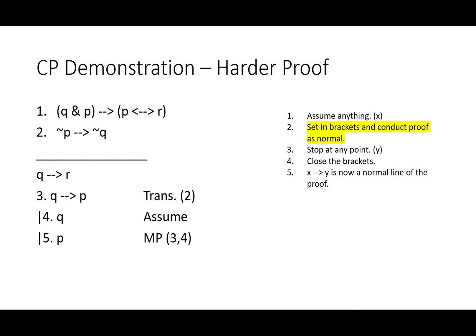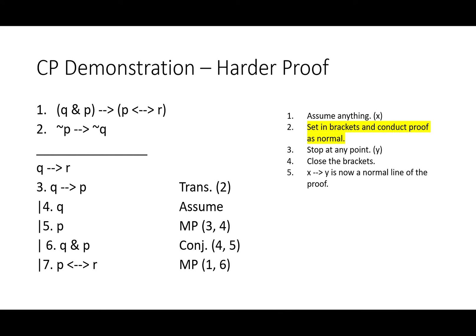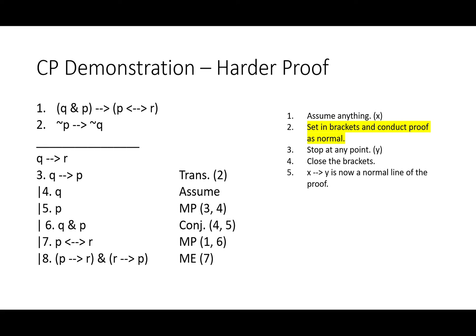Our modus ponens comes from our assumption and our line three, and it gets us P. Why would we want to get that? Well, Q and P is the antecedent of that long conditional in line one.